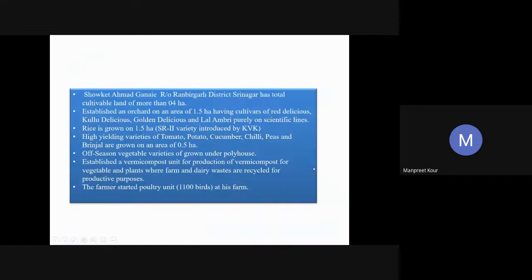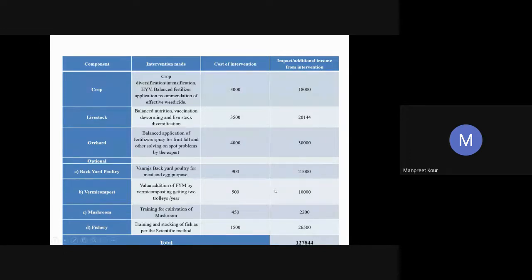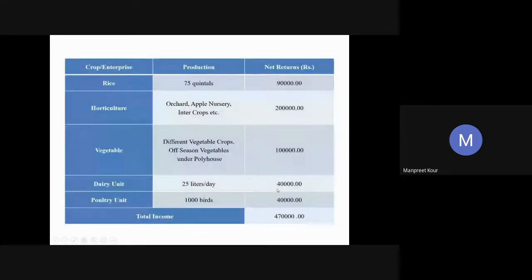Another study from Kashmir: farmer Gunai is an orchard farmer growing different apple varieties and rice. By intervening with improved horticulture management, vegetables, a dairy unit, and a poultry unit, his income has doubled from initially ₹2.5–3 lakhs to ₹5 lakhs. These are the different case studies demonstrating income doubling.